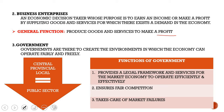Then we look at government. Governments are there to create the environments in which the economy can operate freely and fairly. You have three different levels of government: the central level, provincial, and the local level, and each of them make up the public sector. Government's first function is to provide a legal framework and services for the market economy to operate efficiently and effectively, with laws and regulations in place, including acts such as the Consumer Protection Act to ensure fair competition.